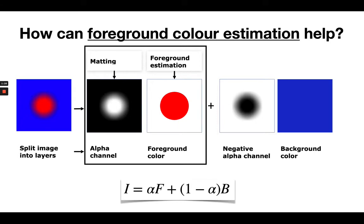Foreground color estimation is a key part of the problem. We begin with the compositing equation, which splits an image into two layers, the foreground and the background, where the blend is dependent on the alpha channel.